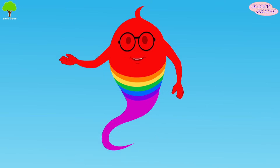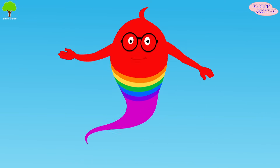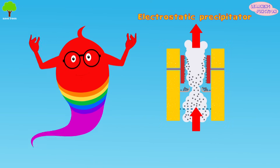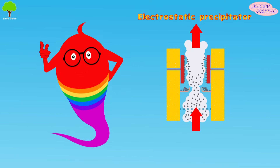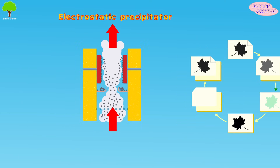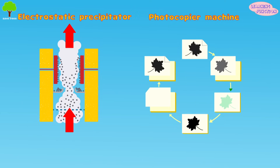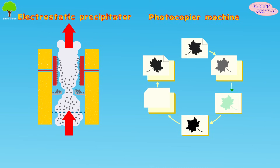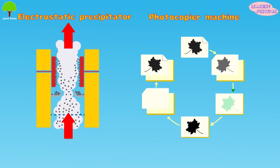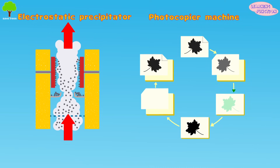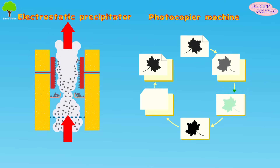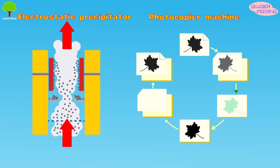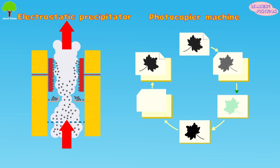Let's see the uses of static electricity. Static electricity is used in the electrostatic precipitator. A photocopier also uses this electricity. Inkjet and laser printers use static electricity to guide a small jet of ink to the appropriate place on the page.